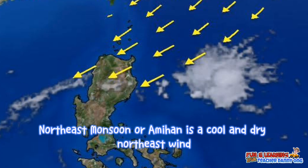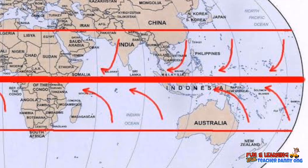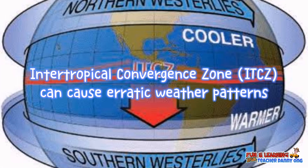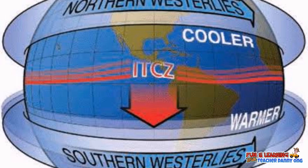Amihan is a cool and dry Northeast wind coming from Siberia and China that flows down to Southeast Asia. In tropical regions like the Philippines, the Northeast and Southeast winds flow toward the equator. Where the winds meet, a narrow zone is called the Intertropical Convergence Zone or ITCZ. This moves north or south of the equator with the seasons.